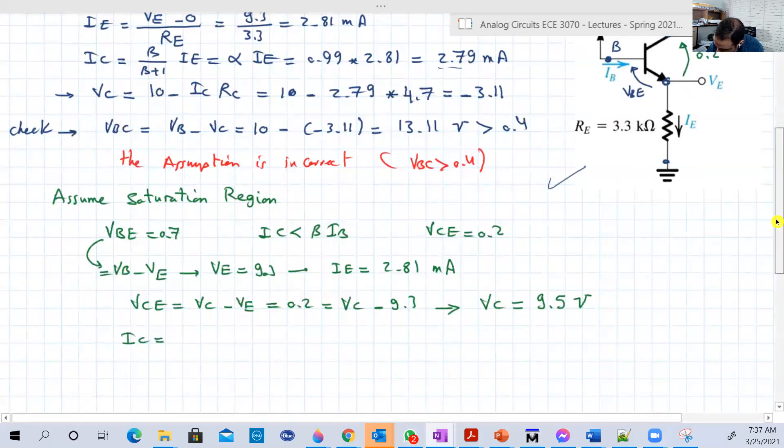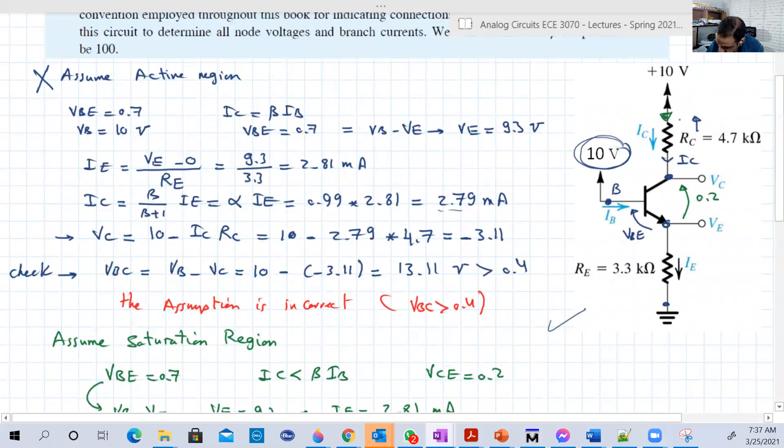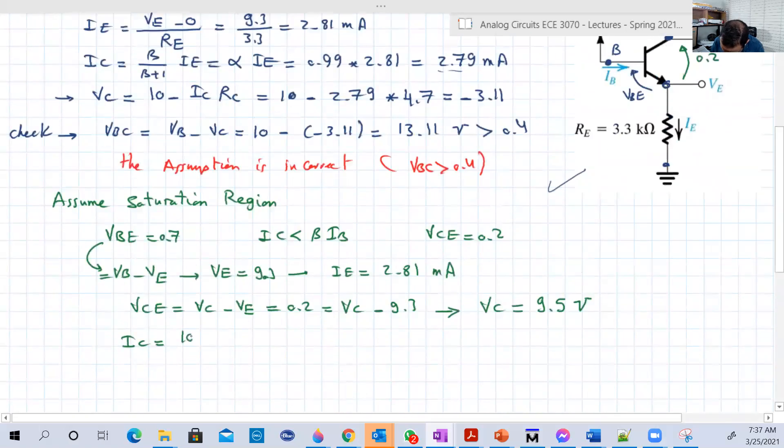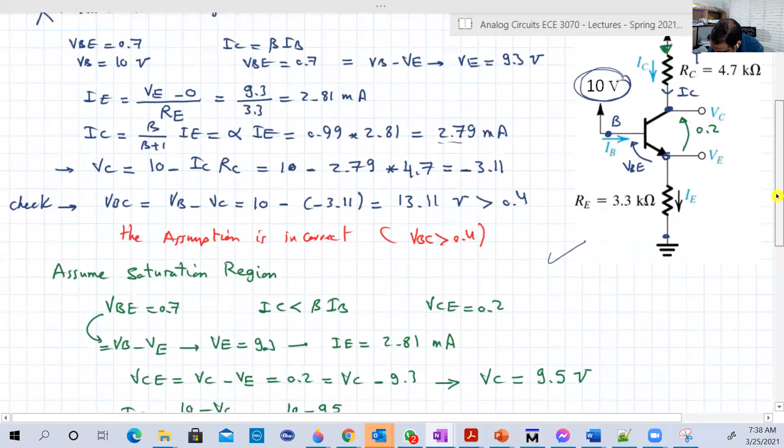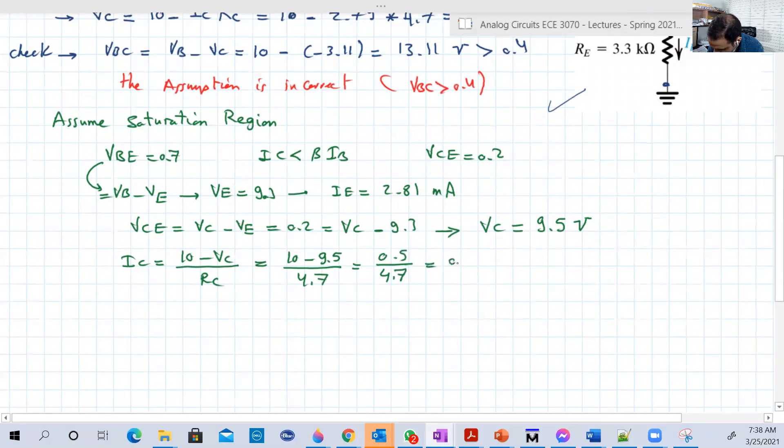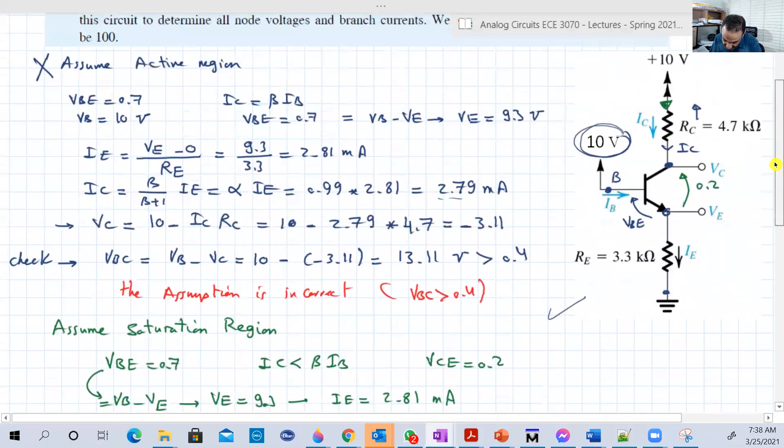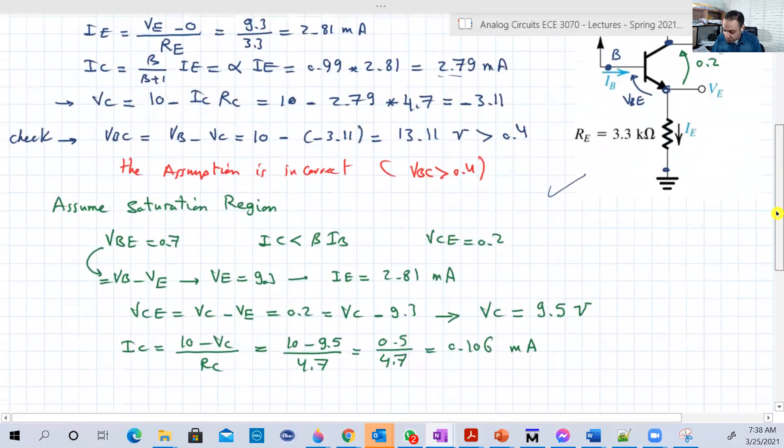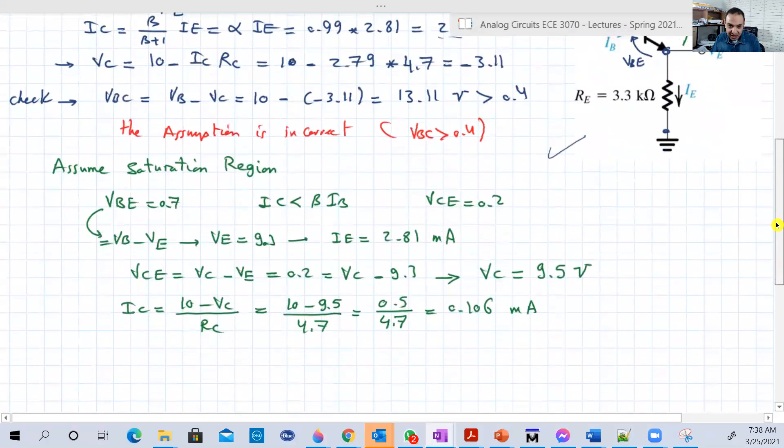So IC, which is flowing from the battery 10 to the collector, it's equal to 10 minus VC over RC, equal to 10 minus 9.5 over RC which is 4.7 kilo ohms. So this will give us 0.5 over 4.7, which is 0.106 milliamperes. Very small. Look, it was, how much it was? It was in the beginning 2.79 milliamperes. Now it's 0.106 milliamperes.